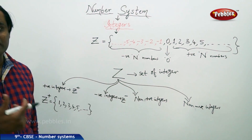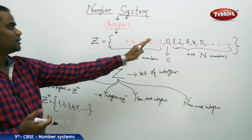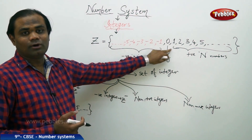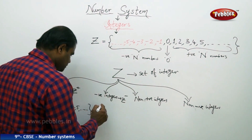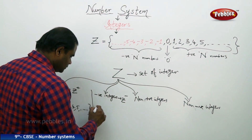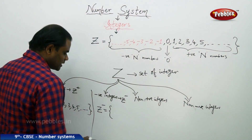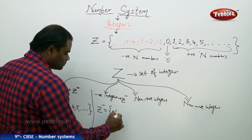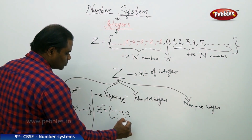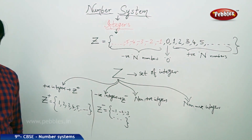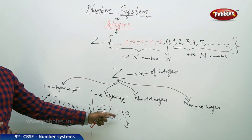Similarly, negative integers Z minus includes all the numbers which come on the negative side — that is, to the left of 0 in the main set of integers Z. Therefore, negative integers denoted by Z minus starts with minus 1, minus 2, minus 3, and so on and so forth.